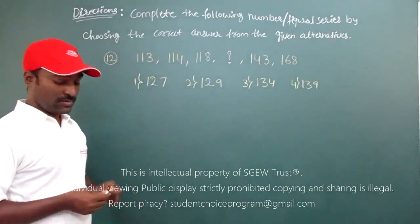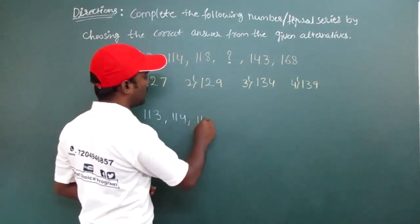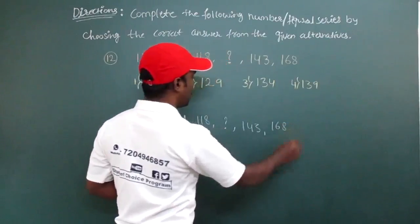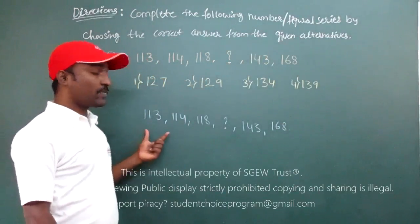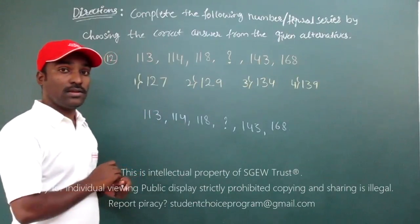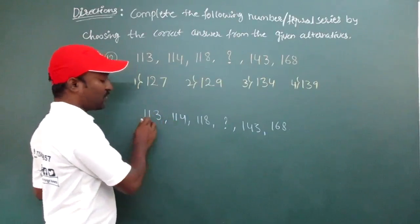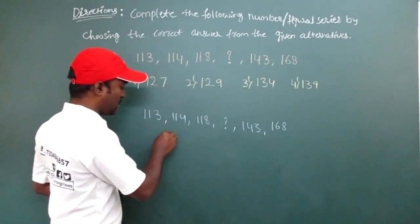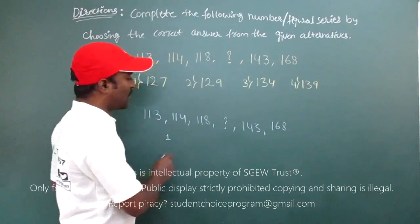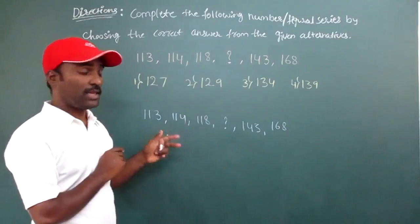Now I will answer the given question. The question is 113, 114, 118, question mark, 143, 168. So now what I will do? I will take difference of neighboring numbers. 114 minus 113 will give me 1. Moving to next numbers, 118 minus 114, it is 4.